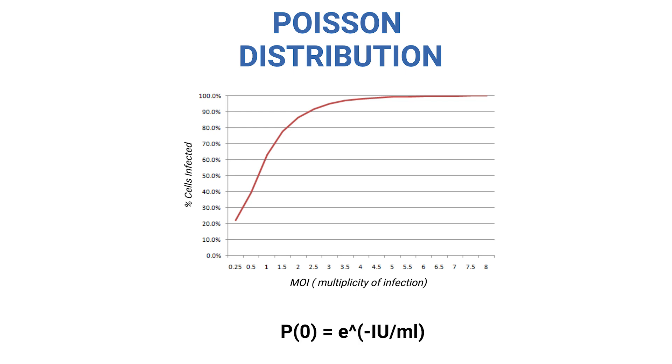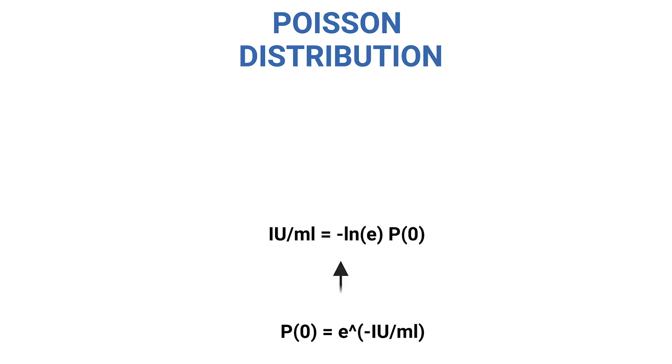The equation on the screen tells us what is the probability of reaching a certain percentage infection starting from a certain number of infectious units. To find the number of infectious units per milliliter when we know the desired infection probability, we rearrange our equation like this.